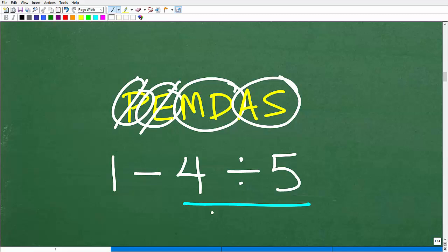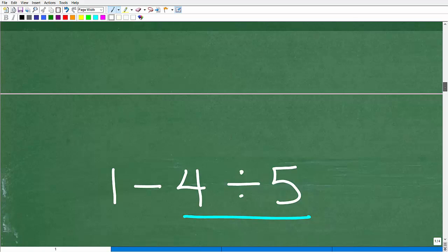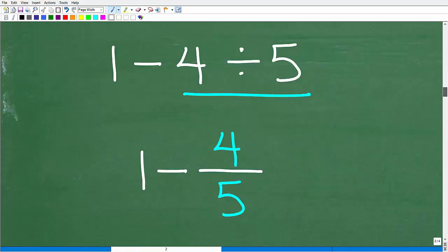What you don't want to do is take 4 and divide it by 5 and try to actually come up with a decimal value. What we want to do here is think of this as a fraction. Your brain is going to focus in on the 4 divided by 5, and 4 divided by 5 is the same thing as 4 fifths. So 1 minus 4 divided by 5 is the equivalent problem: 1 minus 4 fifths.